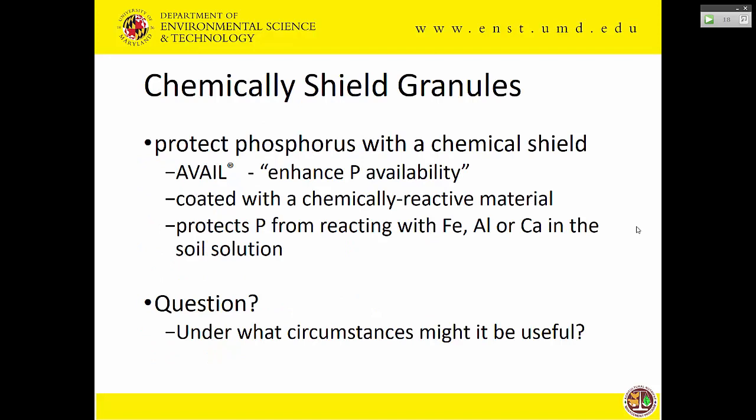There's also chemically shielded fertilizer — a product called Avail has a coating on it. It's proprietary, but it helps allow phosphorus to be more reactive in the soil and not get tied up with iron, aluminum, or calcium. Does it work? There's not a huge amount of work done on efficacy. In some products sold by some vendors, everything has this coating for its phosphorus component. I'm not sure it's always worthwhile, especially in a high-phosphorus soil. There's a lot of work that needs to be done on knowing where these things pay off — perhaps they shouldn't be blanket applications but used more selectively.